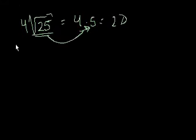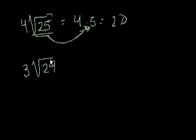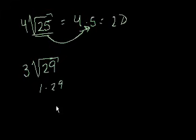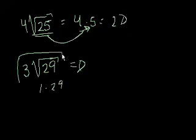What is 3 times the square root of 29? Well, 29 only has two factors — it's a prime number, with only the factors 1 and 29. Neither of those are perfect squares, so we really can't simplify this one anymore. This is already in completely simplified form.